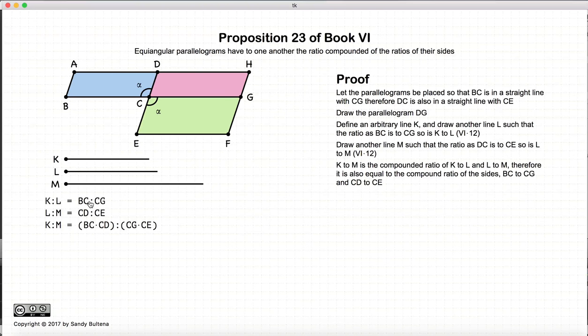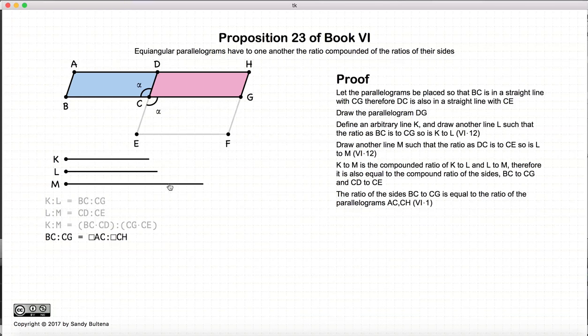Now K to M is the compound ratio of K to L, so it's equal to BC times CD divided by CG to CE, or the ratio of that. So again, here's where the compound ratio is being used.